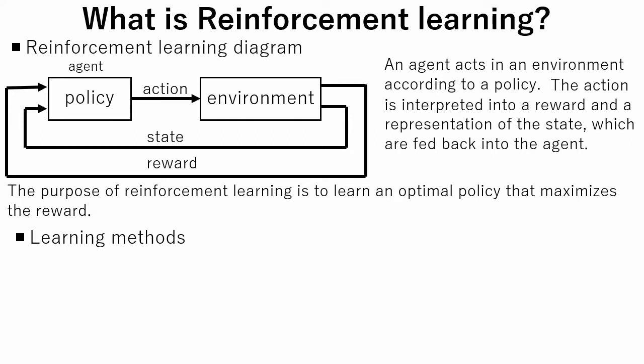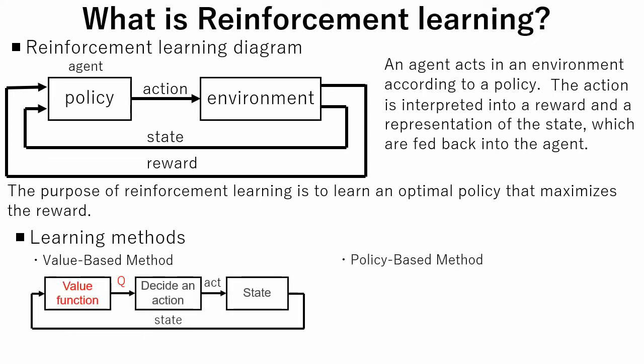There are two learning methods for reinforcement learning: value-based method and policy-based method. With the value-based method, agent learns quality function which represents value of an action in each state.